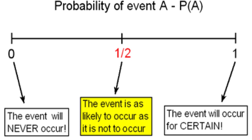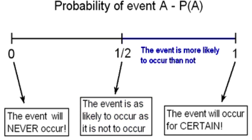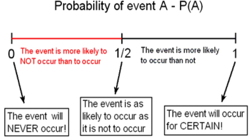Any probability that is greater than 1/2 indicates that the event is more likely to occur than it is not to occur. And a probability that is below 1/2 indicates that the event is more likely not to occur than it is to occur.